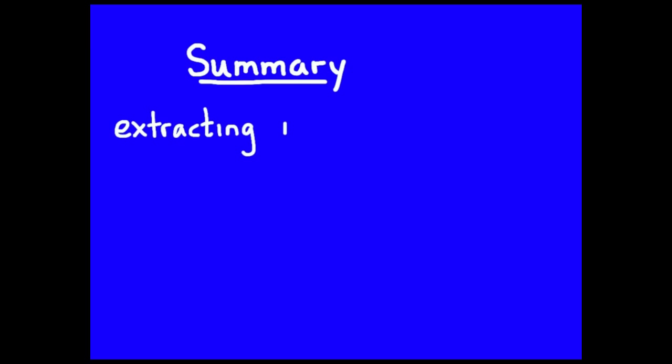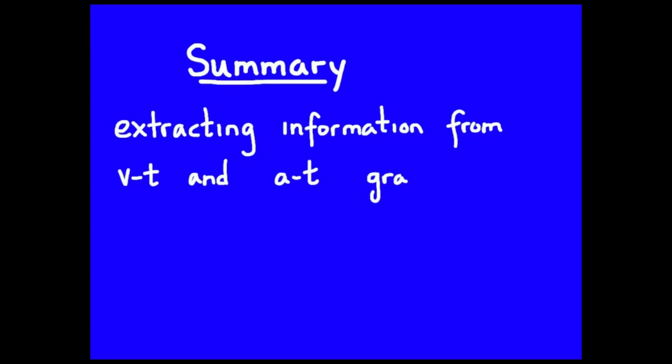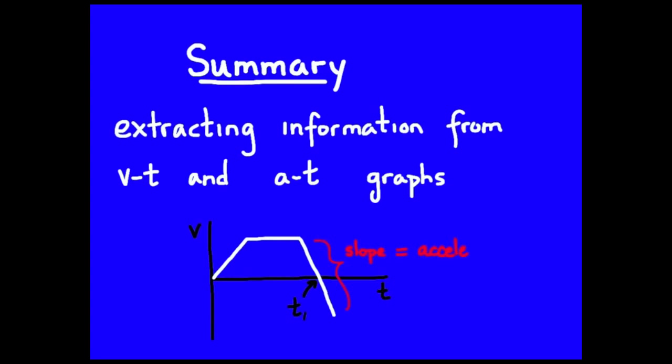This is part two of a two-part lesson on getting information from motion graphs. In this second part we looked at how to get information from a velocity-time or acceleration-time graph. The main points had to do with slope and area: for a VT graph, the slope gives acceleration, and the area underneath gives change in position or displacement.